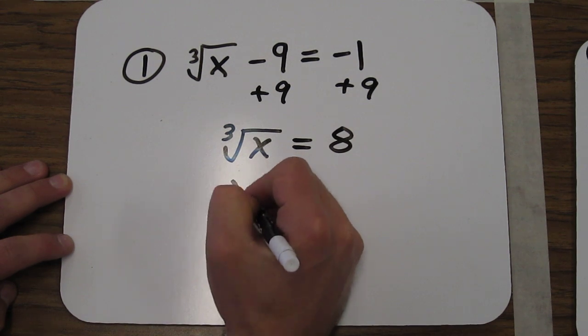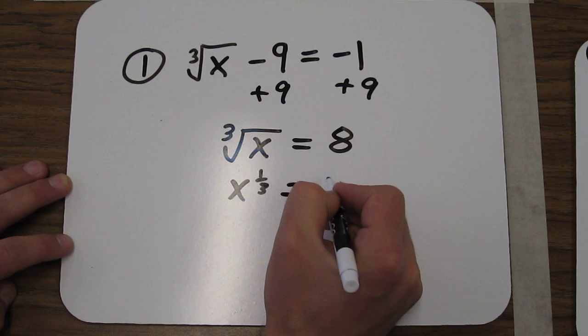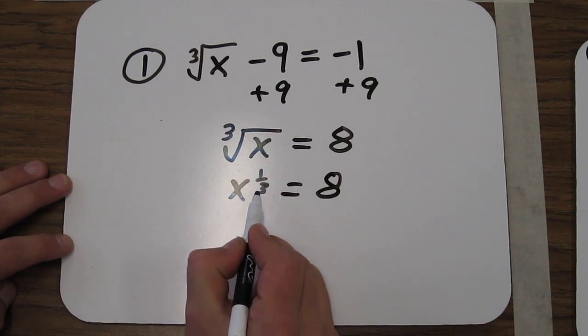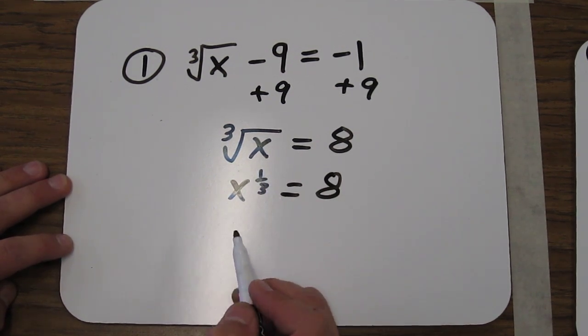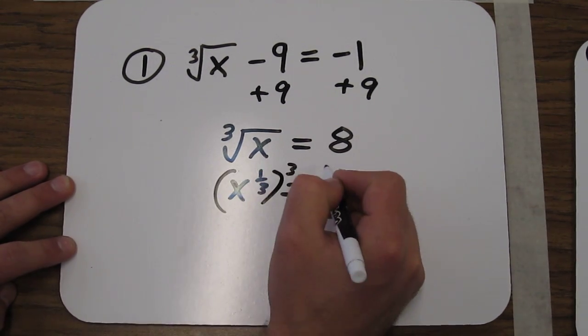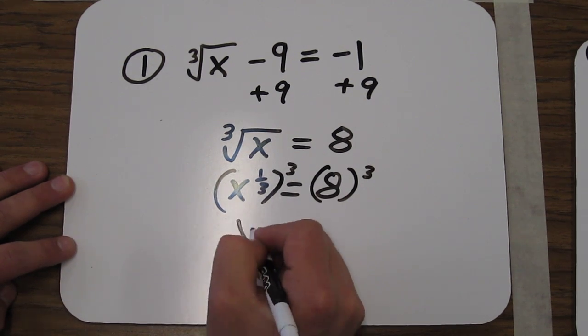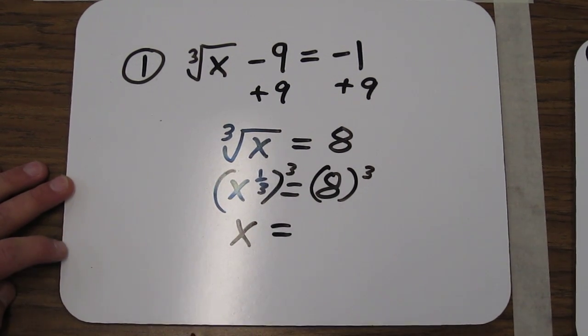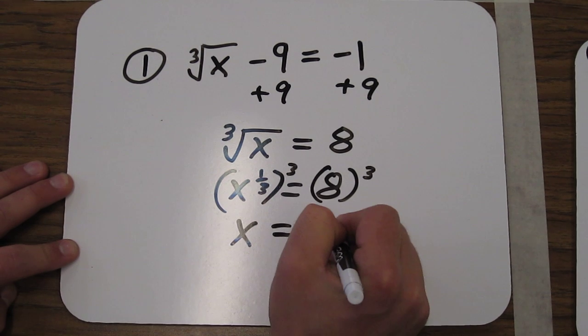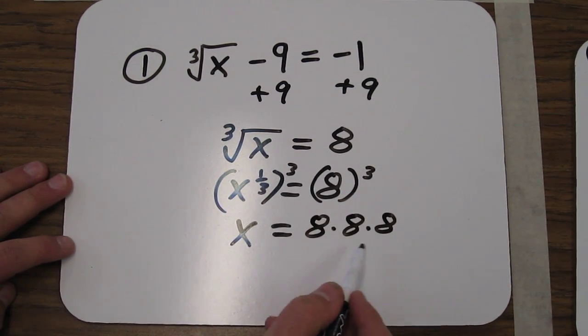Now, another way of writing the cube root of x is x to the 1/3. We want x to the first power, not x to the 1/3 power. So by cubing both sides, 3 times 1/3 is just 1. So we get x equals 8 cubed, 8 times 8 times 8. I'll leave you to do that on your calculator.